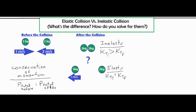Let's go ahead and solve this problem: what is the velocity of the two kilogram object? We're also going to prove whether it is inelastic or elastic. We'll use conservation of momentum to solve for the unknown velocity — finding the momentum of both objects before the collision and setting it equal to both objects after the collision, then solving for the unknown v.